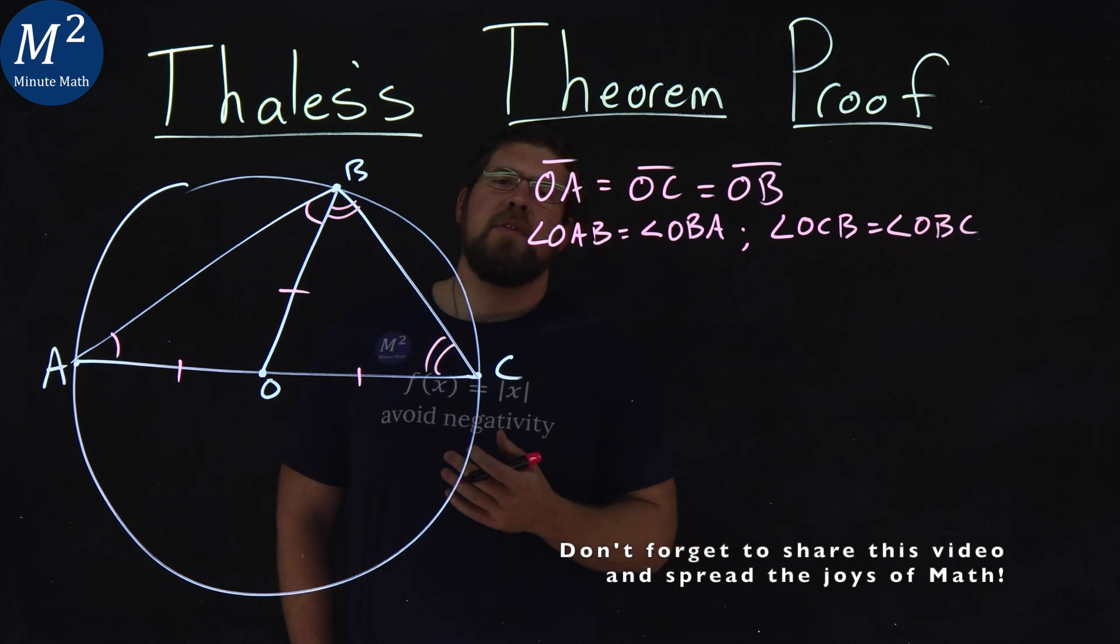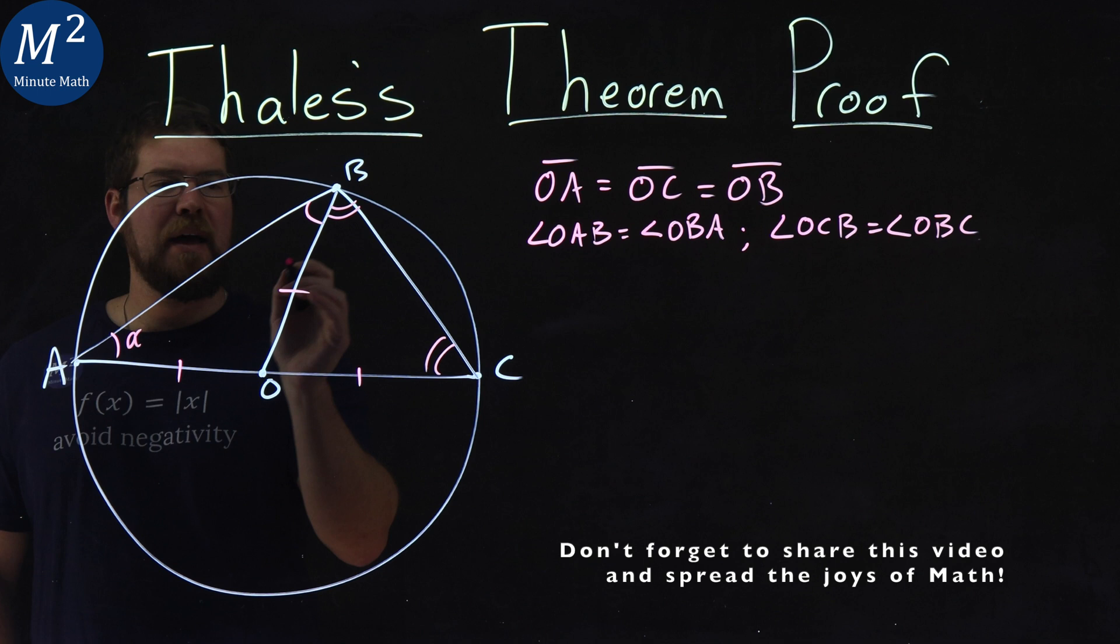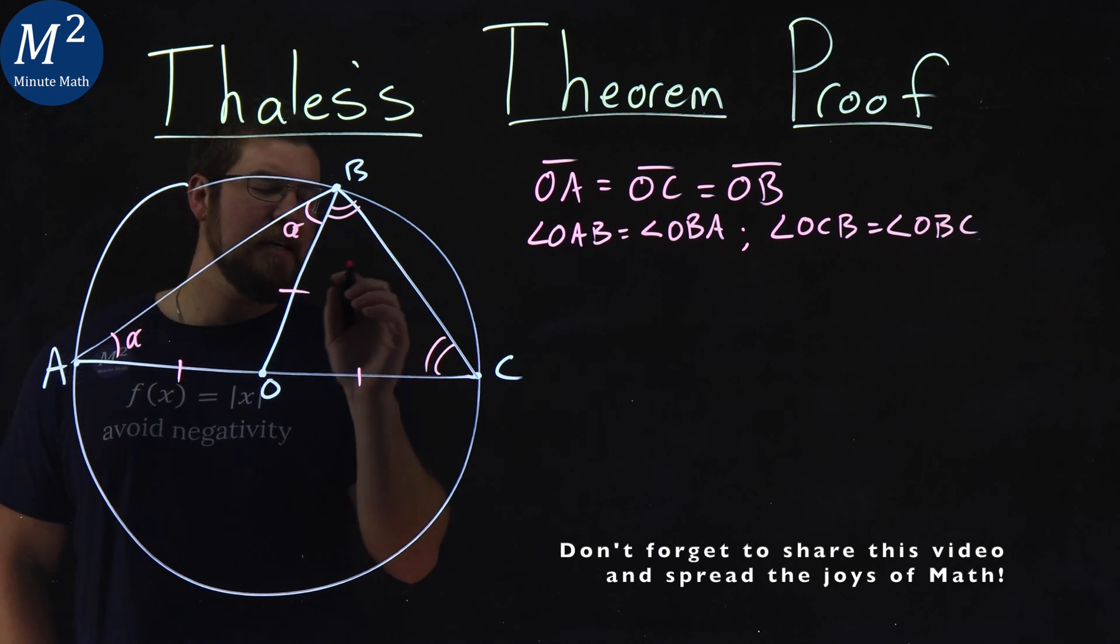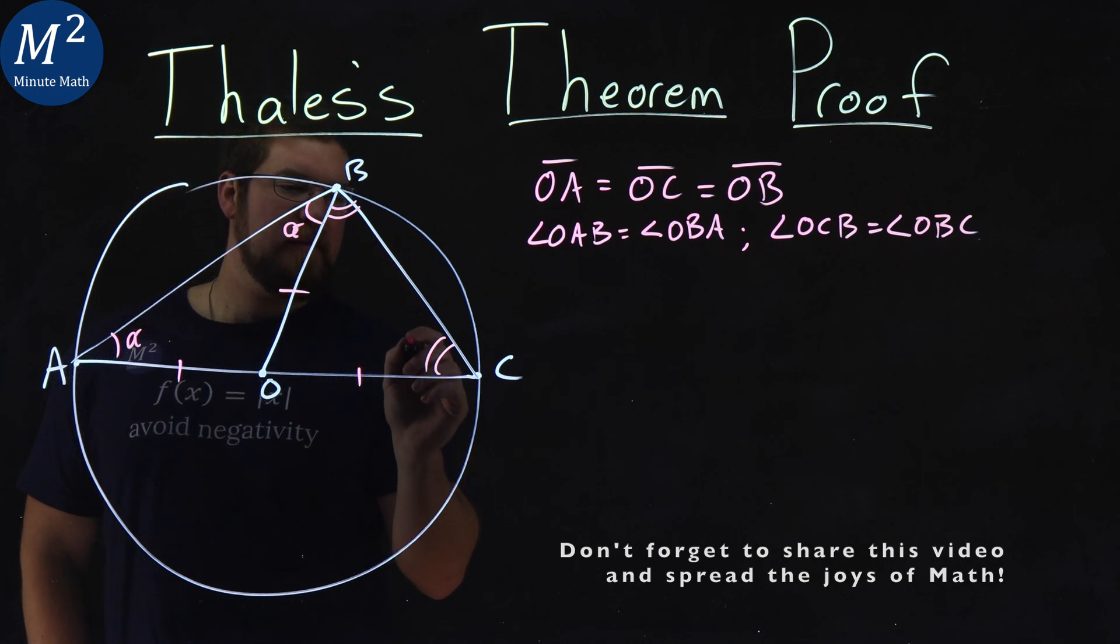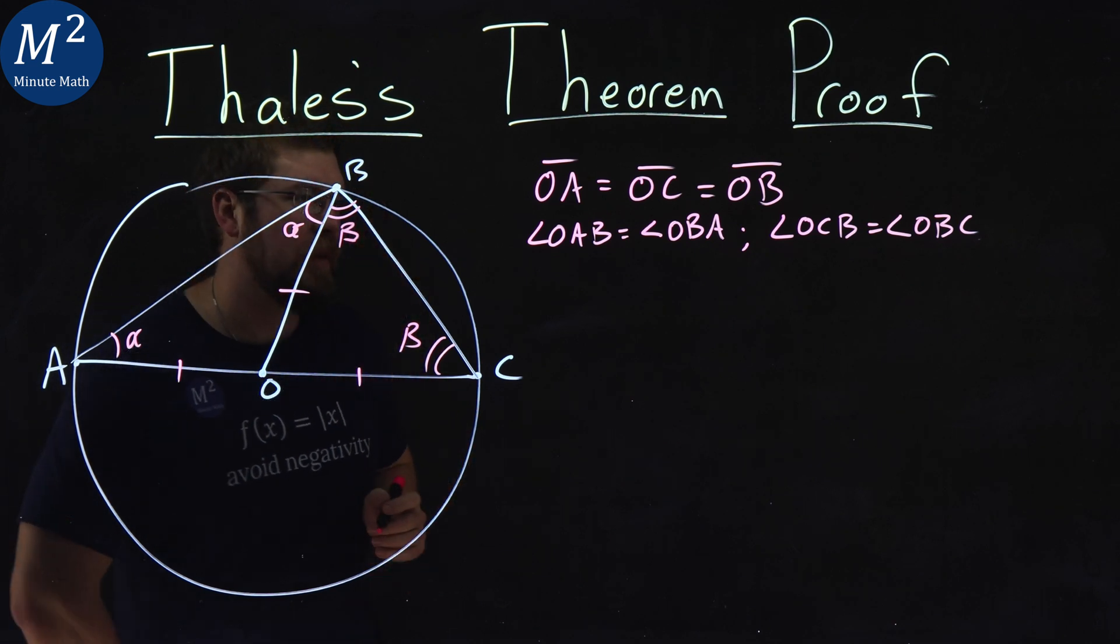So let's go label these angles here. I'm going to label OAB to be alpha, that length here, just to make it a little easier to see. And OCB to be beta. The same thing with OBC there.